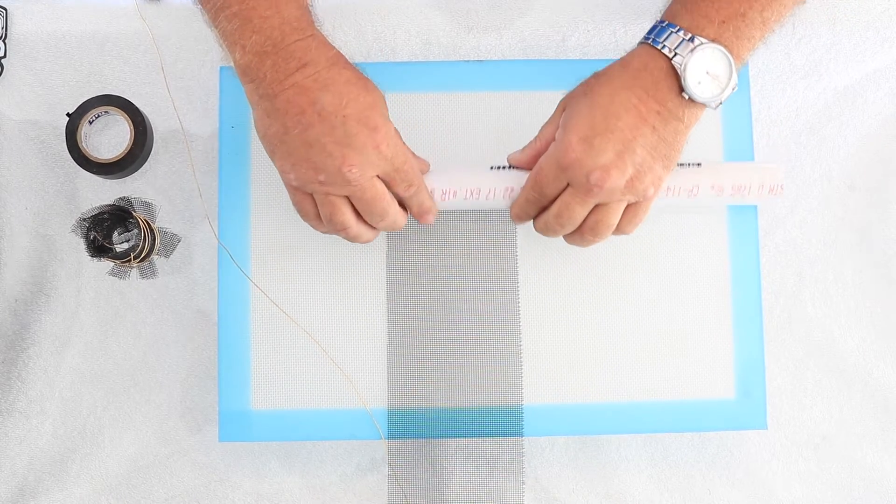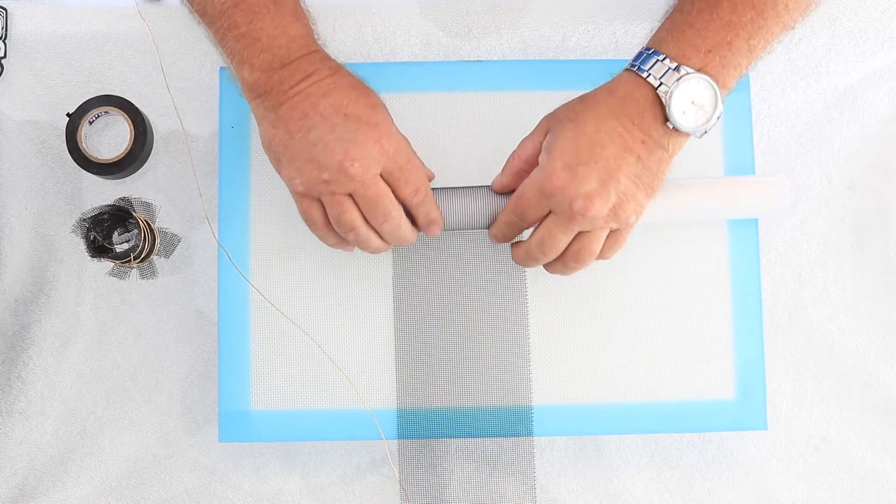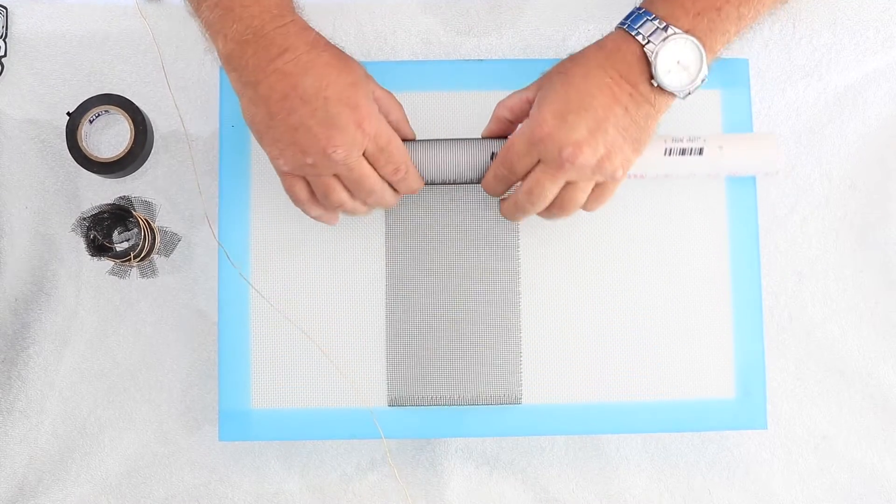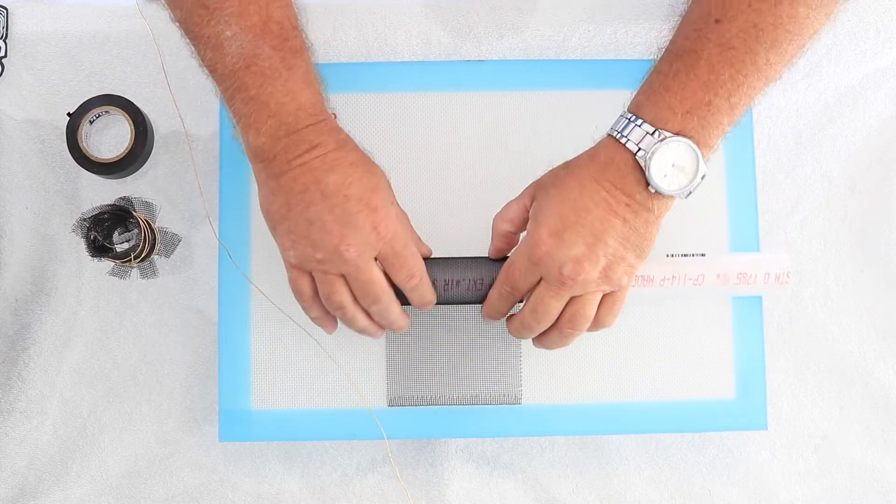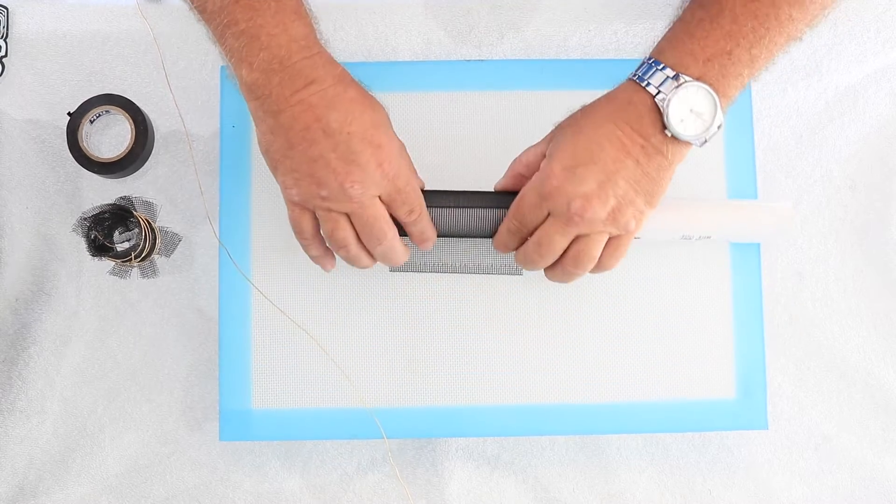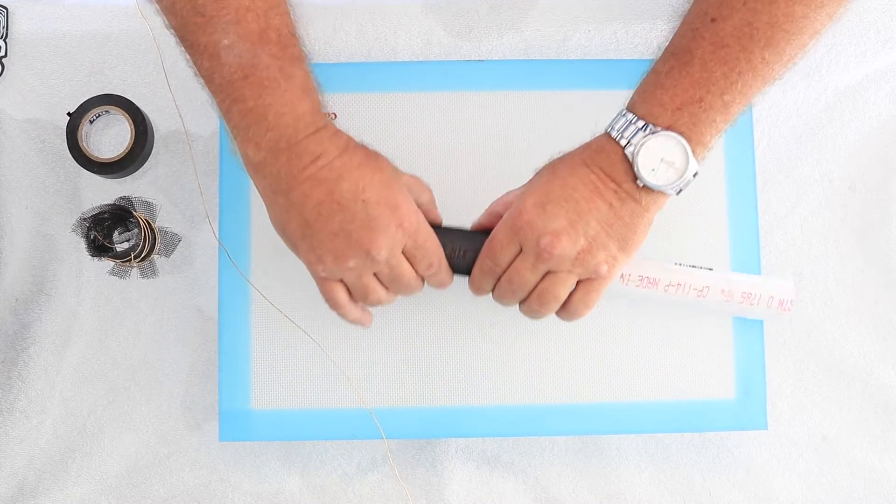And then you just start rolling it, not too tight, but keeping it in a good form. Just keep rolling. And it needs to make at least two turns around the unit to be correct.